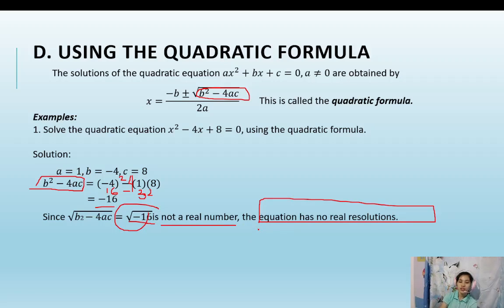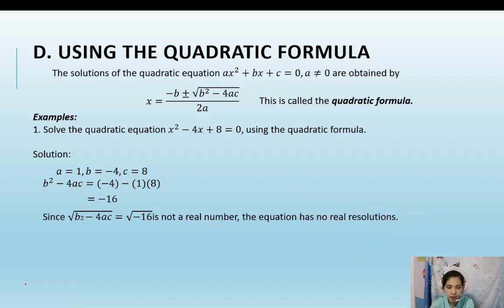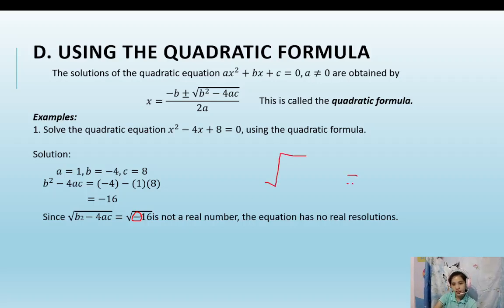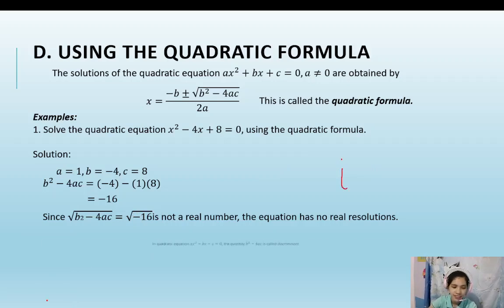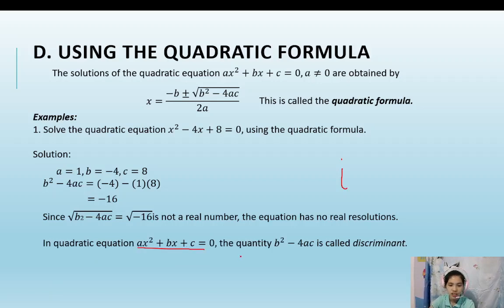When you compute the discriminant and get a negative answer, there is no real solution. You don't need to continue further, because the square root of any negative number gives an imaginary number. In the quadratic equation, the quantity b squared minus 4ac is called the discriminant.